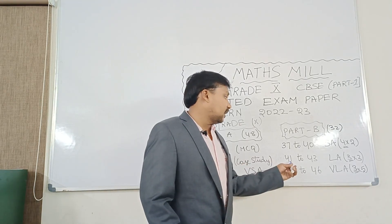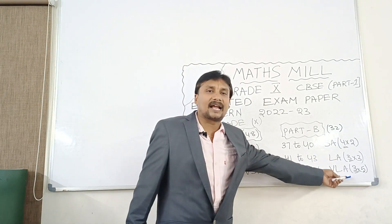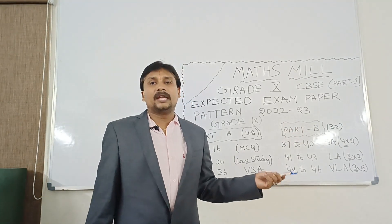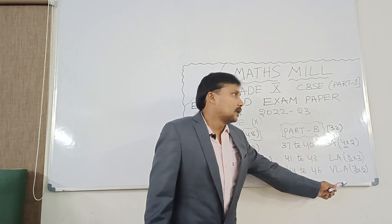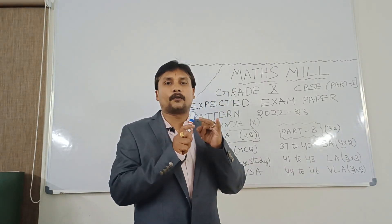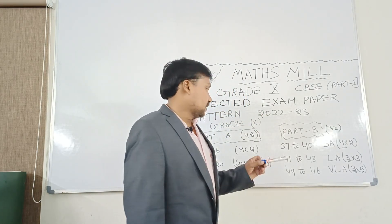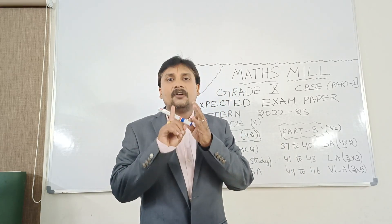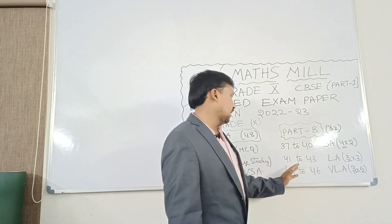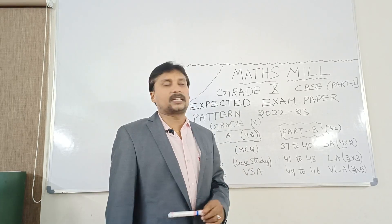Next, questions 41 to 43 — three questions — are long answer questions. Each one carries 3 marks, so 3 times 3 is 9 marks. Now, very long answer questions: till now in CBSE there are no 5-mark questions, but questions 44 and 45 are very long answer questions, each consisting of 5 marks — so 2 times 5 is 10 marks. Wait — there are three such questions, so 3 times 5 is 15 marks. So Part B total is 8 plus 9 plus 15 equals 32 marks. We got it — 32 marks.